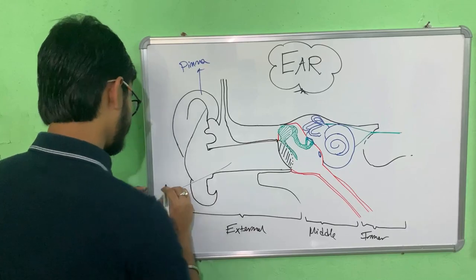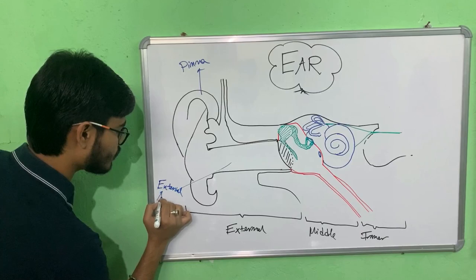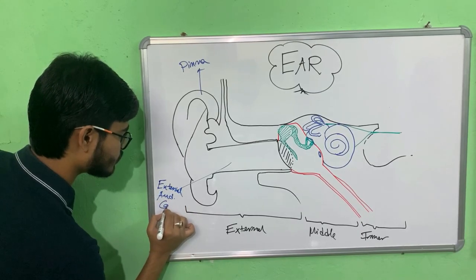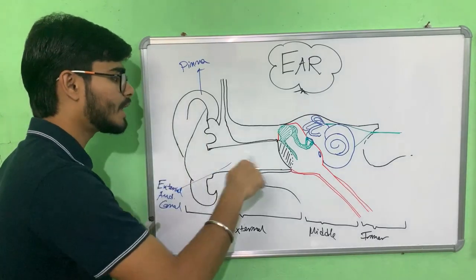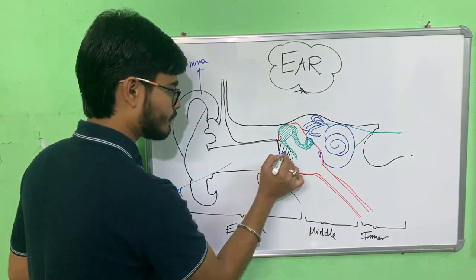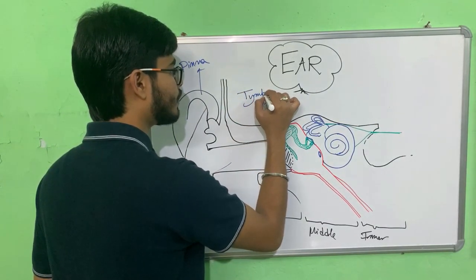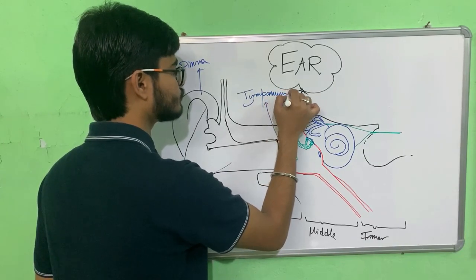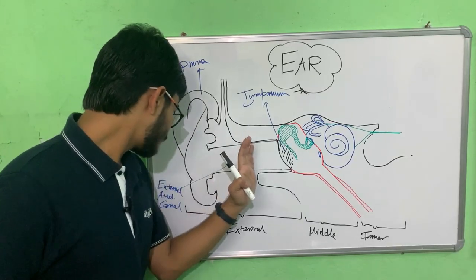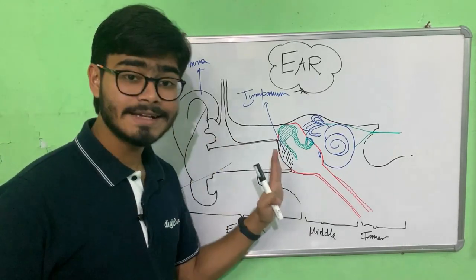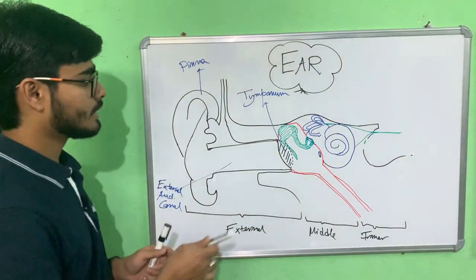Next we have this tubular structure called the external auditory canal. Sound waves pass through it and hit the tympanic membrane. The sound waves collected by the pinna move through the external auditory canal and hit the tympanic membrane, also known as the eardrum or tympanum. This creates a vibration in the tympanic membrane.